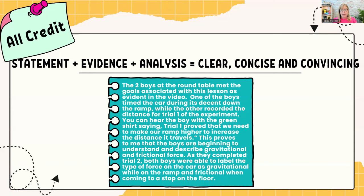So now we have that same statement plus the evidence, and now we add analysis. Listen to how it changes. 'The two boys at the roundtable met the goals associated with this lesson, as evident in the video. One of the boys timed the car during its descent down the ramp, while the other recorded the distance for trial one of the experiment. You can hear the boy with the green shirt saying, Trial one proved that we need to make our ramp higher to increase the distance it travels. This proves to me that the boys are beginning to understand and describe gravitational and frictional force. As they completed trial two, both boys were able to label the type of force on the car as gravitational while on the ramp and frictional when it's coming to a stop on the floor.'